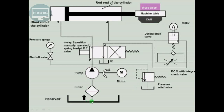Now we operate the spool of the direction control valve to obtain the left envelope mode. Fluid from the reservoir enters the filter, then from pump port P it goes to port 1, and then enters through port 3 into the blind end of the cylinder.